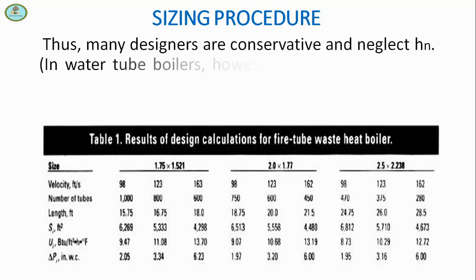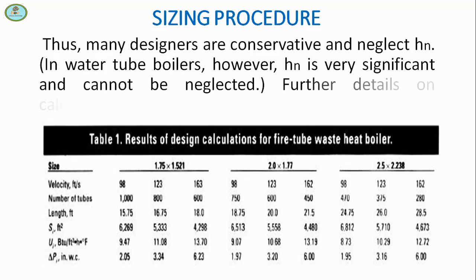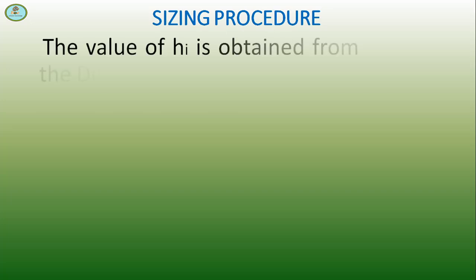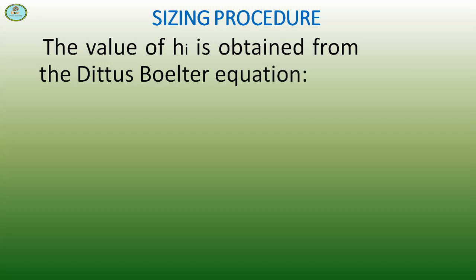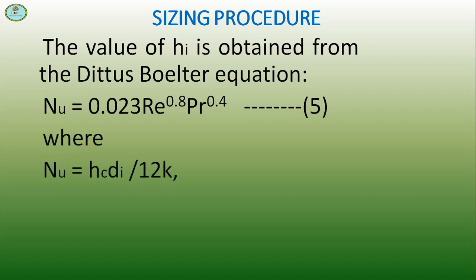In water tube boilers, however, Hn is very significant and cannot be neglected. Further details on calculating Hn can be found in the table below. The value of Hᵢ is obtained from the Datus-Volter equation. This is equation 5, where Nu = Hc × Dᵢ / (12K) and Re = 15.2W / (Mu × Dᵢ) and Pr = Mu × Cp / K.